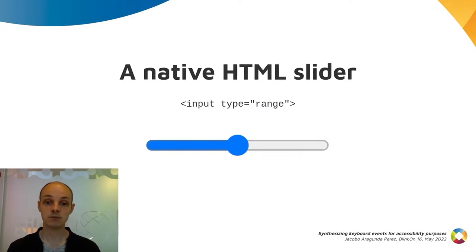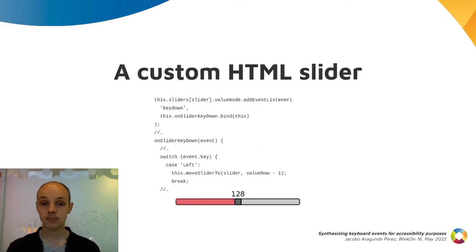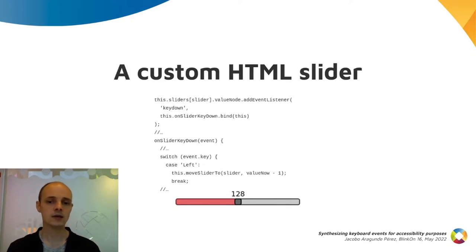We already have some support in place for these two actions in Blink. If applied to a native HTML slider, the increase and decrease actions will work as expected. A custom widget with a role slider will also expose those actions, but they won't work yet. Why? Because the logic for these actions is implemented in JavaScript and is triggered by key press events only.